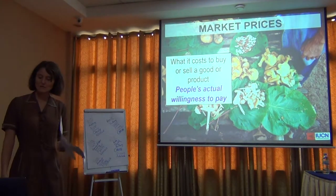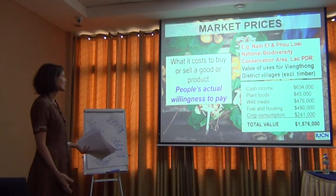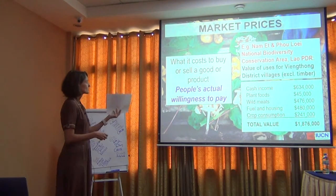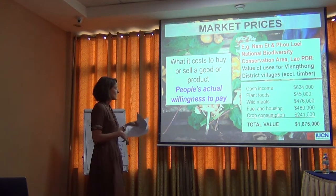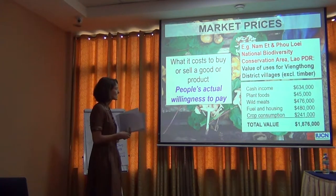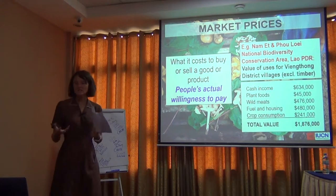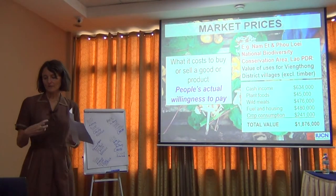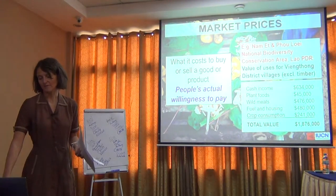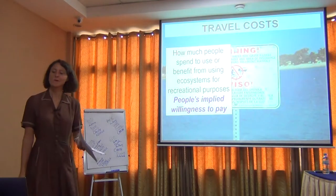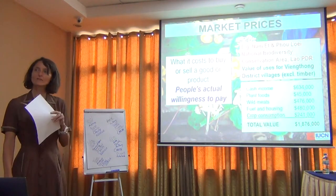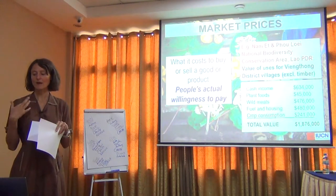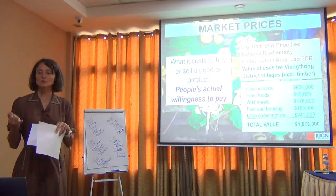The market price method should not be new to you — it's basically what does it cost on the market to buy or sell the particular good or product coming from that ecosystem. Here's an example where they know that from this particular conservation area, there's a certain value assigned to meat coming from there — bushmeat — as well as plants in the area and fuel for cooking. And everyone in the class exercise will be assigned one of these methods to come up with an example of how you would apply it to value trees in a city.